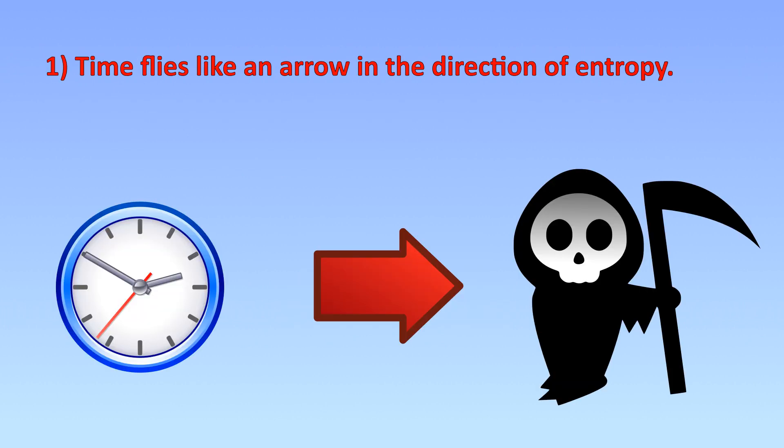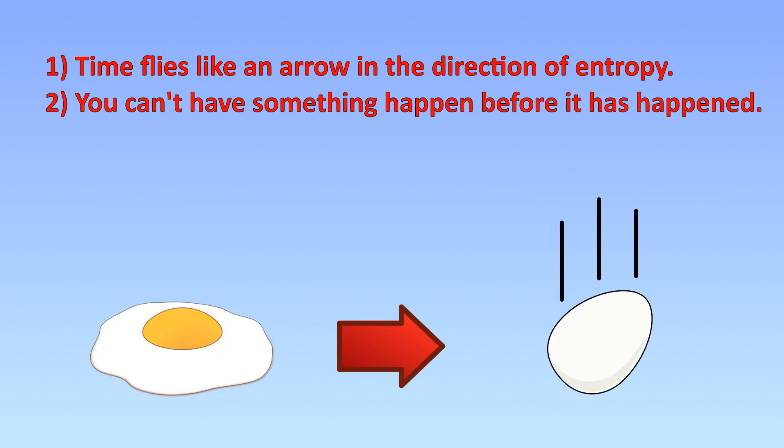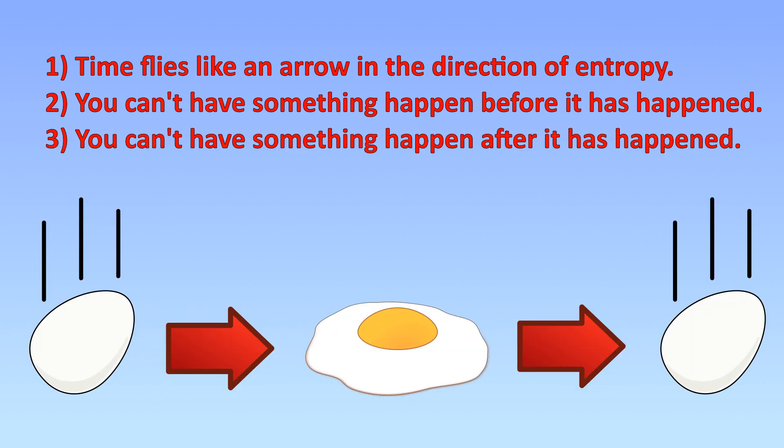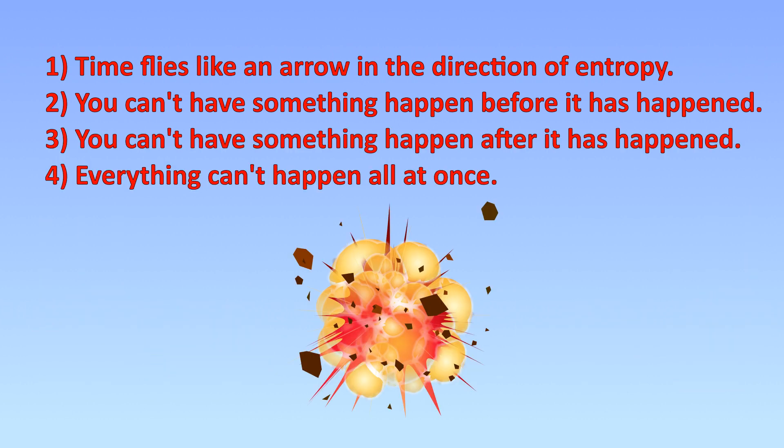First, time flies like an arrow in the direction of entropy. Two, you can't have something happen before it's happened. Three, you can't have something happen after it happened. And four, everything can't happen all at once.